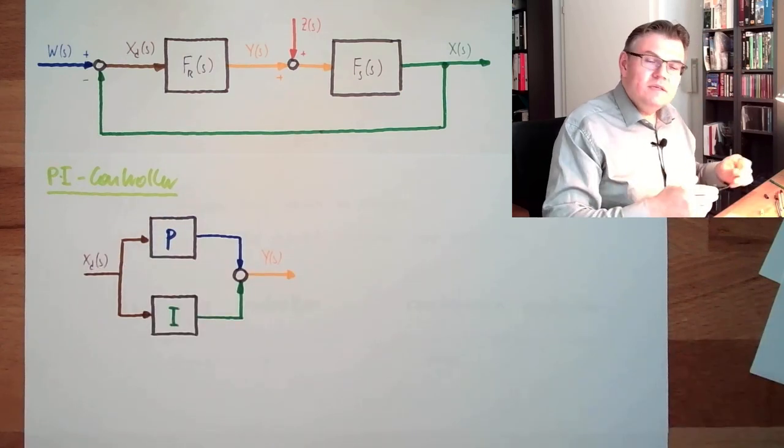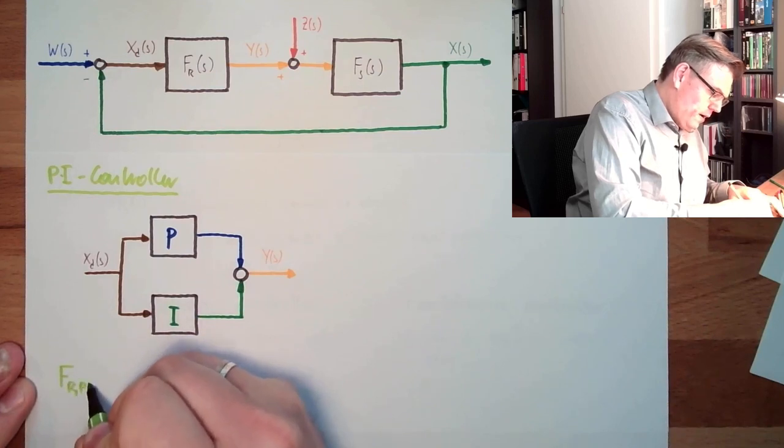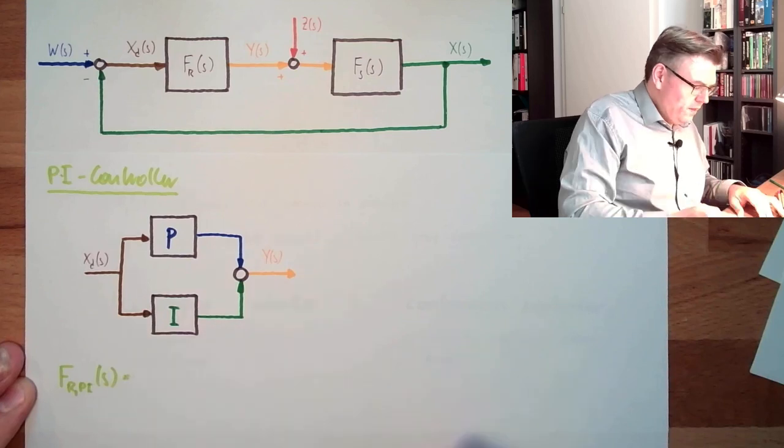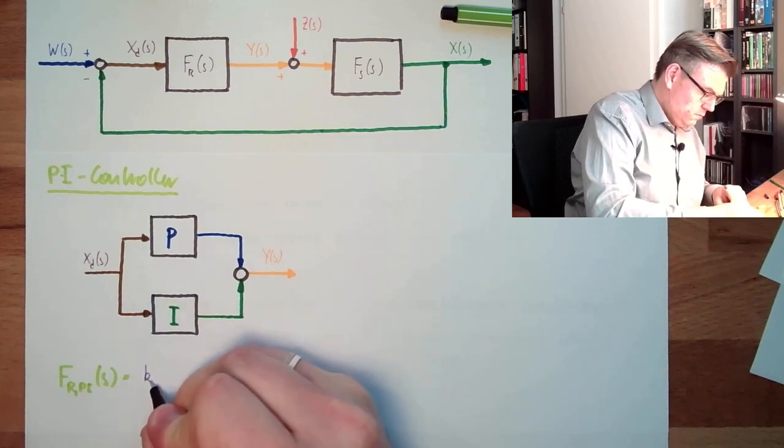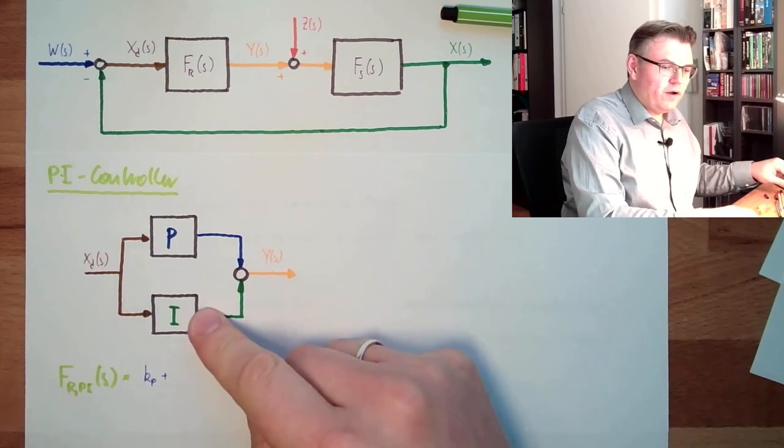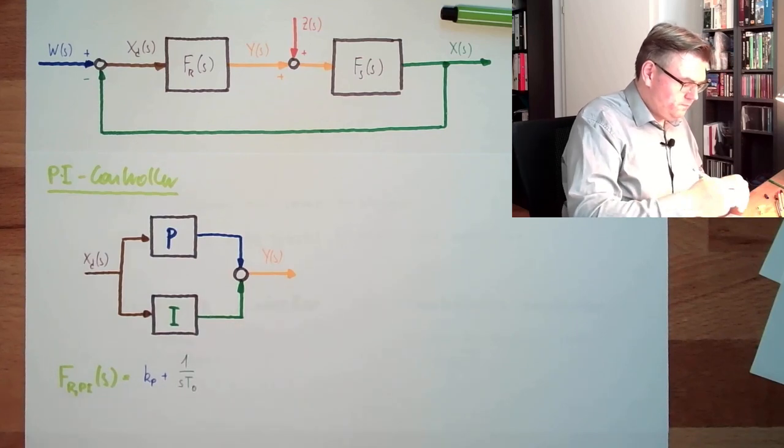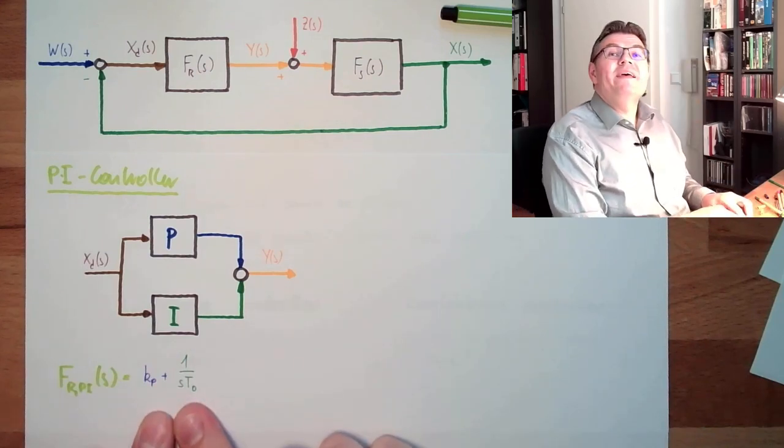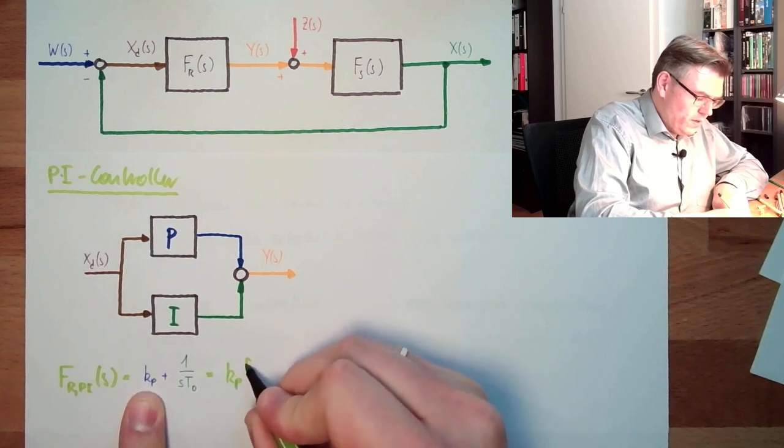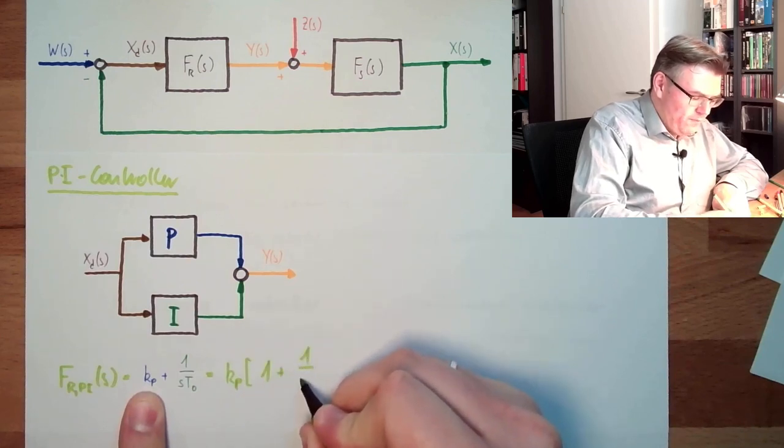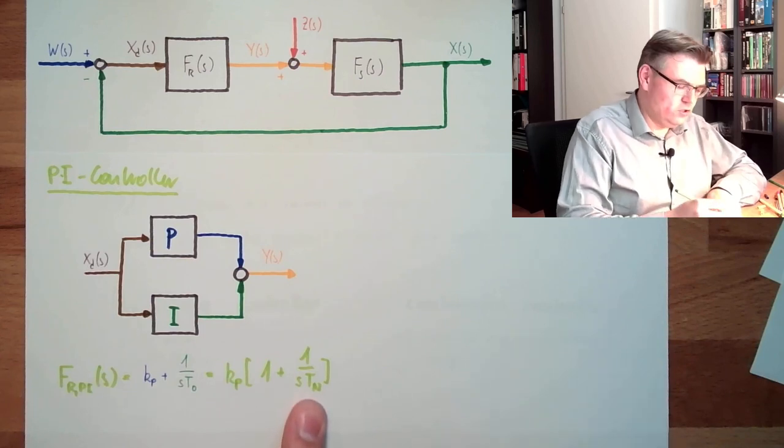So what is the total transfer function of a PI-controller? F-regulator PI from s. This would be the transfer function of a PI-controller, which is actually KP plus the transfer function of the I-controller. And there we said, this is 1 divided by STO. So usually we write it, we factor out KP and make a big bracket. Then it's 1 plus 1 divided by STN. This is the interesting part.